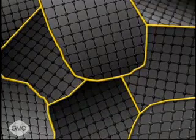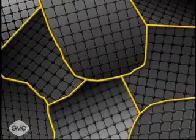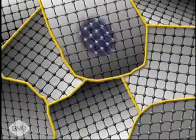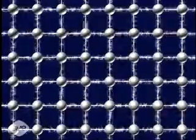Because the grains form independently, their crystal structures develop tilted in various directions. All atoms in these crystalline structures are held in place by electromagnetic attraction to neighboring atoms.